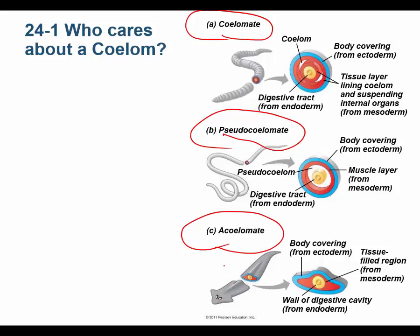A coelom is a body cavity, but a true coelom is a body cavity surrounded on all sides by mesoderm. There are three embryonic tissue layers: endoderm, mesoderm, and ectoderm, and what these layers become determines the fate of those tissues - whether it becomes the liver, the skin, or a nerve. A pseudocoelomate has a body cavity surrounded on only one side by mesoderm, with the other side being endoderm. An acoelomate doesn't have a body cavity at all.